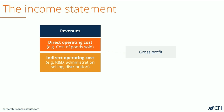If we take revenues and deduct the direct operating costs and then deduct the indirect operating costs, we arrive at the next subtotal, operating income. The terms profit or earnings can be used interchangeably with income. Operating income is often referred to as EBIT, which stands for earnings before interest and taxes.